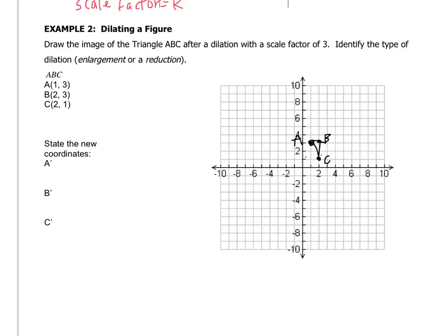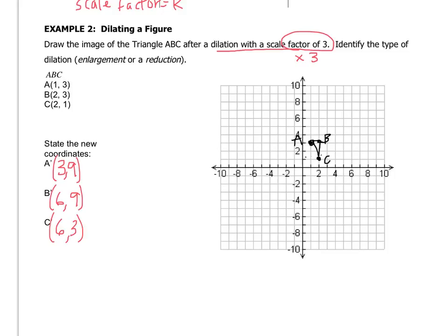Let's create the coordinates. We're going to create a new triangle with a scale factor of 3, which means multiplying each coordinate by 3. So: 1 times 3 is 3, and 3 times 3 is 9 — A prime ends up at (3, 9). Then 2 times 3 is 6, and 3 times 3 is 9 — B prime ends up at (6, 9). And 2 times 3 is 6, and 1 times 3 is 3 — C prime ends up at (6, 3).